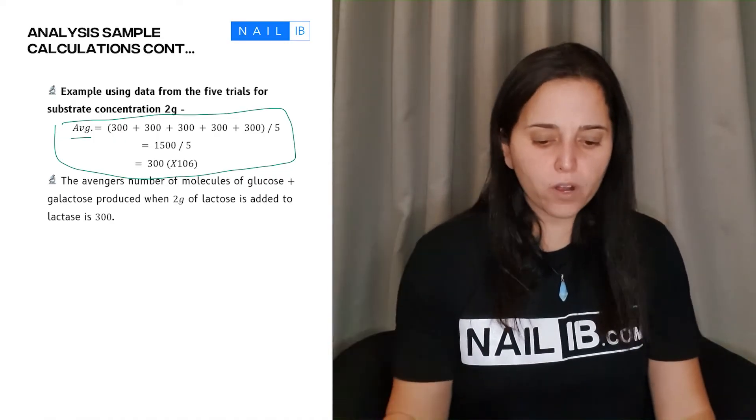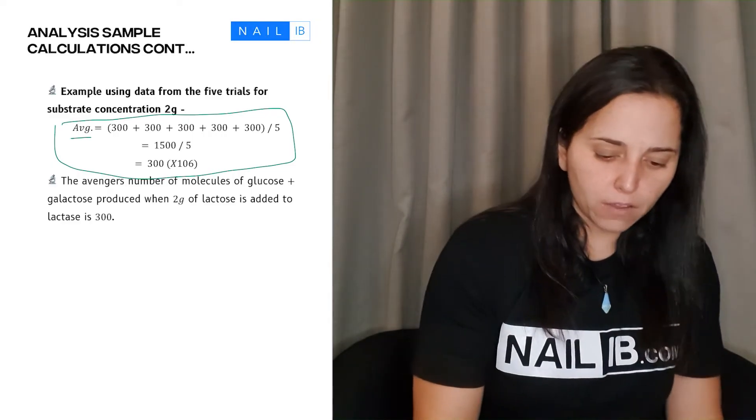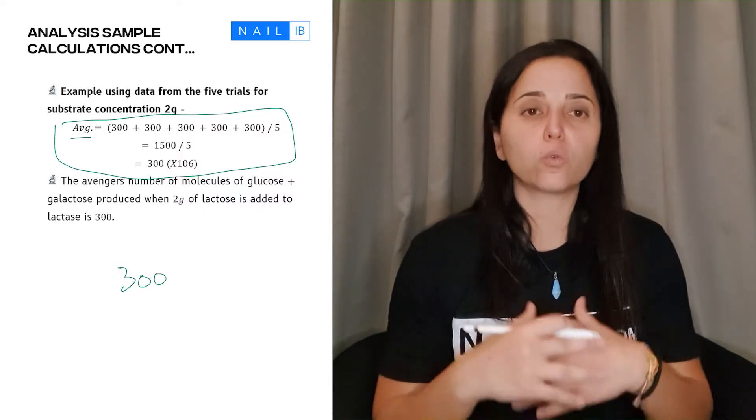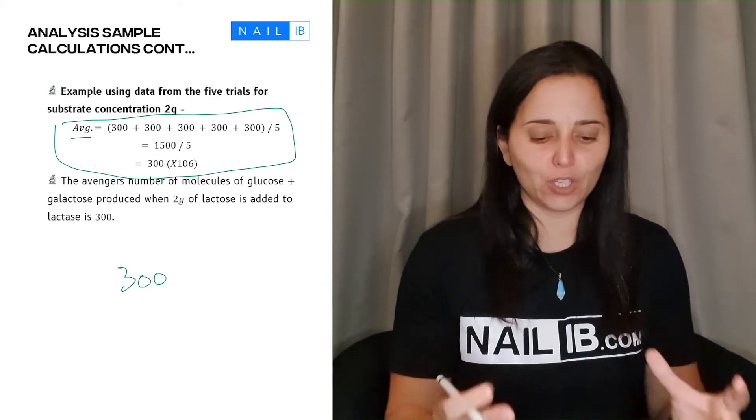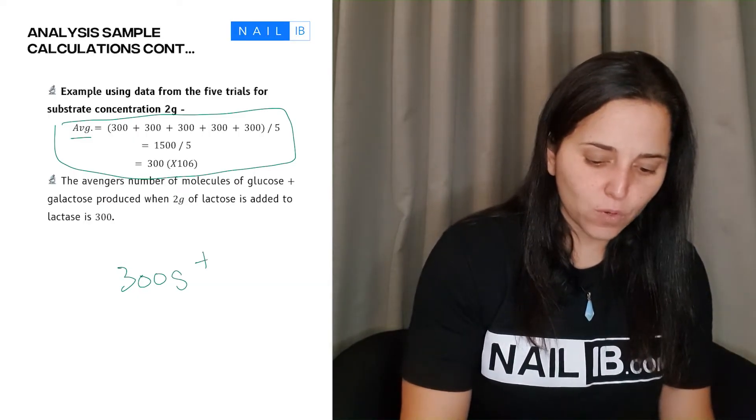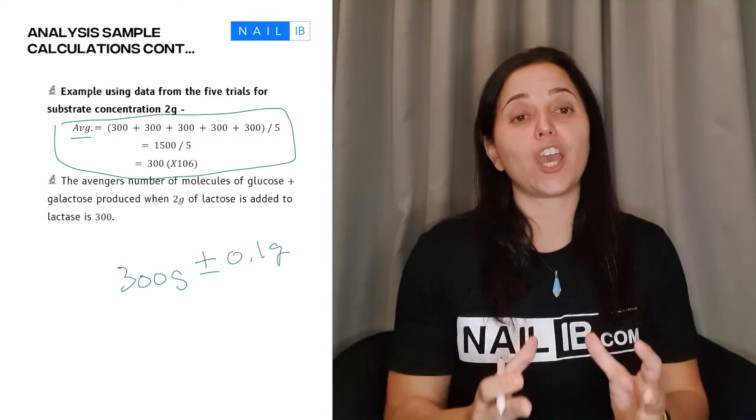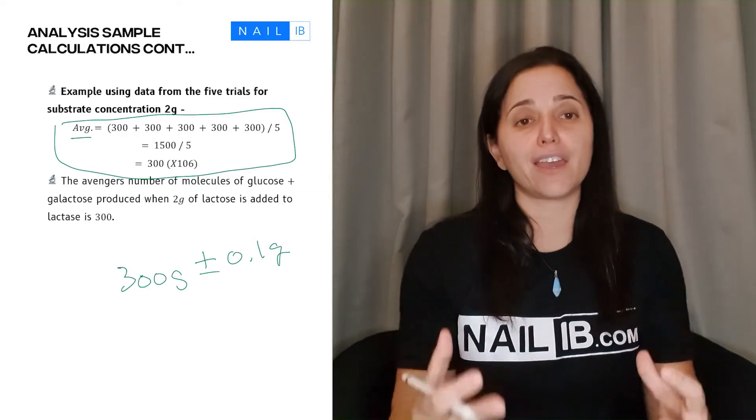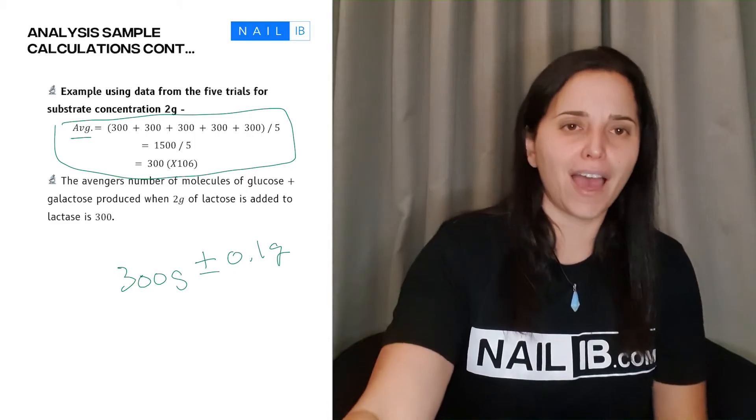Now it is extremely important that when you do this that you put the unit. So if the kid came out with 300, 300 what? A lot of students put the number but they forget to put the unit. So I don't know if this was, let's say grams, grams, then what? Do you put it plus 0.1 grams uncertainty? Students forget to put that. So when you're showing calculations, make sure you're also putting the unit and uncertainty after you finalize the calculations because that's also important.